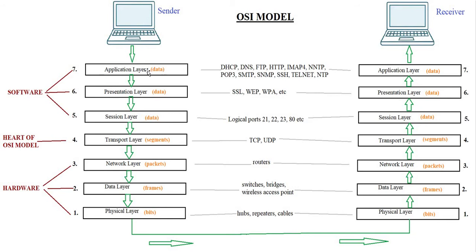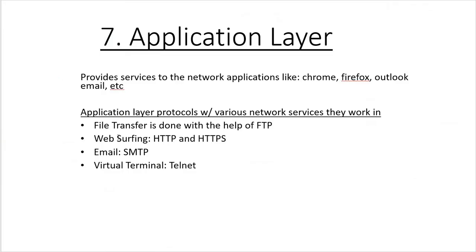The OSI model has seven layers: Layer 7 is the Application layer, Layer 6 is the Presentation layer, Layer 5 is the Session layer, Layer 4 is the Transport layer, Layer 3 is the Network layer, Layer 2 is the Data Link layer, and Layer 1 is the Physical layer.